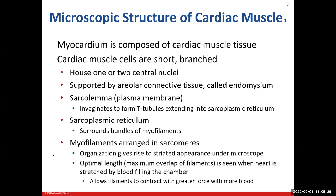As you recall, skeletal muscle was long and multinucleated, whereas cardiac muscle is going to be short and it will branch. It looks like a Y on its side. It can be multinucleated — normally it's going to have one or two nuclei. The location of cardiac muscle tissue is going to be in the myocardium, which is the middle layer of the heart, and it makes up the majority of the heart wall.